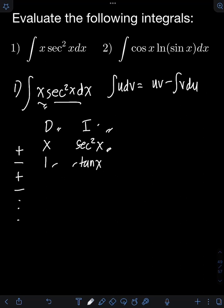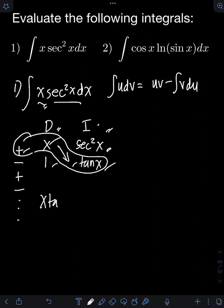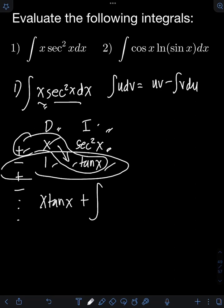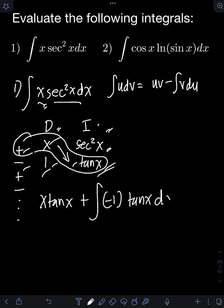So how do we write the final answer? We multiply the diagonal terms including the sign convention at the side. We get positive x times tan x, which is x tan x. We still need to add the integral of the product of the terms on the last row, which is negative 1 times tan x dx. Since negative 1 is just a constant, we get x tan x minus the integral of tan x dx.